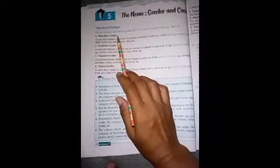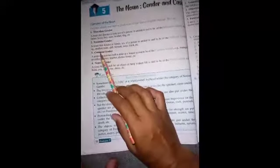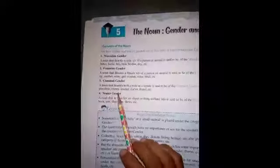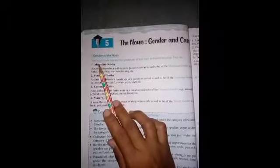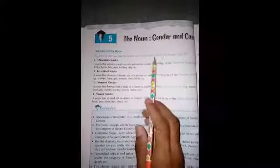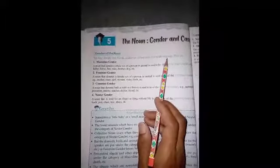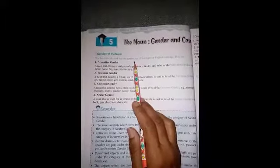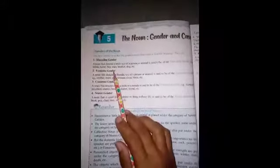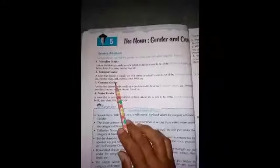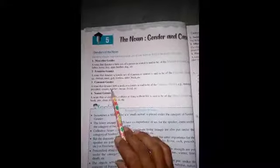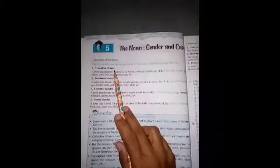They are masculine gender, feminine gender, common gender, and neutral gender. I again repeat: we all know that the genders are of four types in English language. The first one is masculine, the second is feminine, the third is common, and the fourth is neutral. First of all we understand about masculine gender.